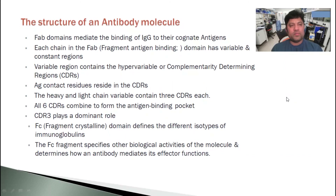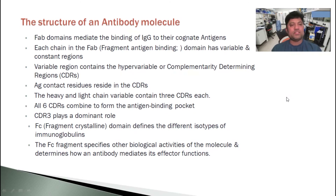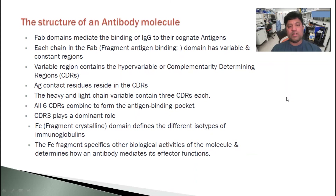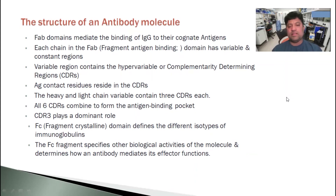The FAB domain — FAB stands for Fragment Antigen Binding — mediates the binding of the immunoglobulin to its cognate antigen. Each chain in the FAB domain has variable and constant regions. The variable region contains the hypervariable and complementarity determining regions, known as CDRs. The heavy and light chain variable regions each contain three CDRs, and all six CDRs combine to form the antigen binding complex, with CDR3 playing a dominant role. The FC domain — FC stands for Fragment Crystalline — defines the different isotypes of immunoglobulin and determines how an antibody mediates its effector function.